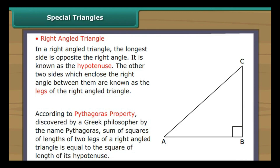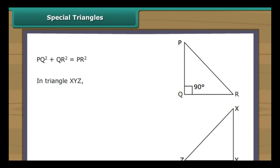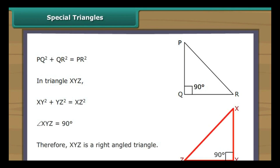In right-angled triangle PQR, PQ² plus QR² equals PR². In triangle XYZ, if XY² plus YZ² equals XZ², then we measure angle XYZ — the angle opposite to hypotenuse XZ — and find it equals 90 degrees. Therefore, XYZ is a right-angled triangle.